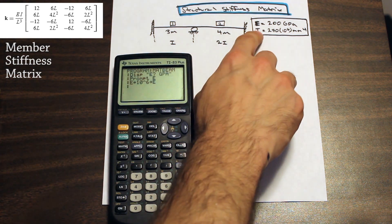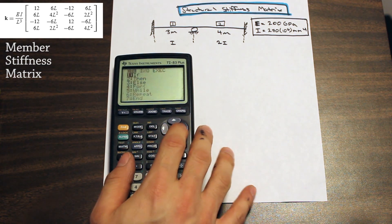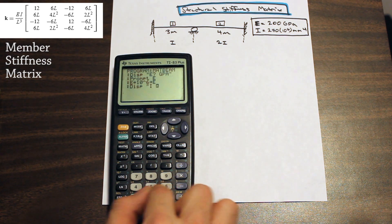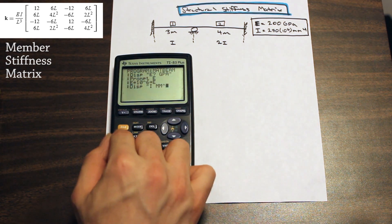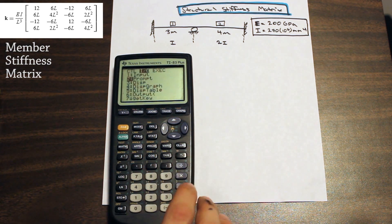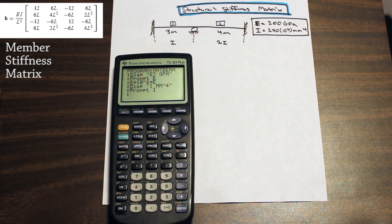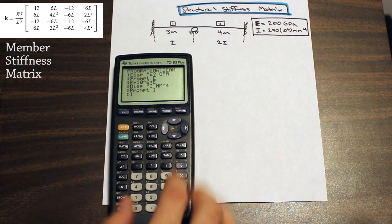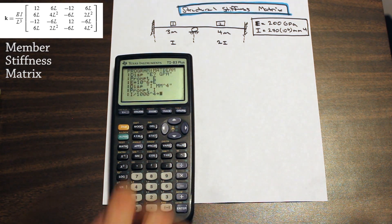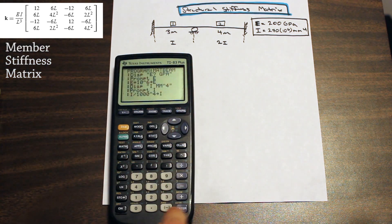Next, we prompt for I — moment of inertia — and we almost always get it in millimeters to the fourth. So we display a prompt asking for I in mm⁴ and store it in I. To convert millimeters to the fourth to meters to the fourth, we divide by one thousand to the fourth, and store that back in I. The calculator handles the conversion for us automatically.